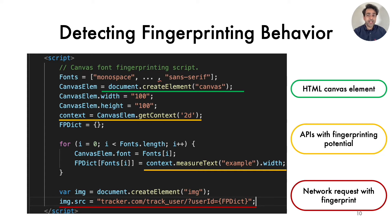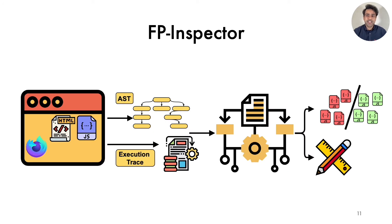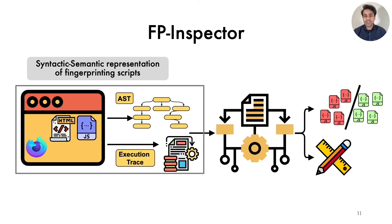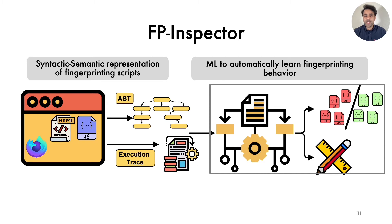By analyzing the script, we are able to observe the script's internal and external behavioral context. The internal context gives us a perspective about the inner workings of the script, like what combinations of APIs are called and whether the script mostly contains APIs with fingerprinting potential or a random combination. The external context allows us to observe the script's interaction with the webpage through HTML elements and its communication with external entities through network requests, which we use as a proxy of the script's non-tracking or tracking functionality.